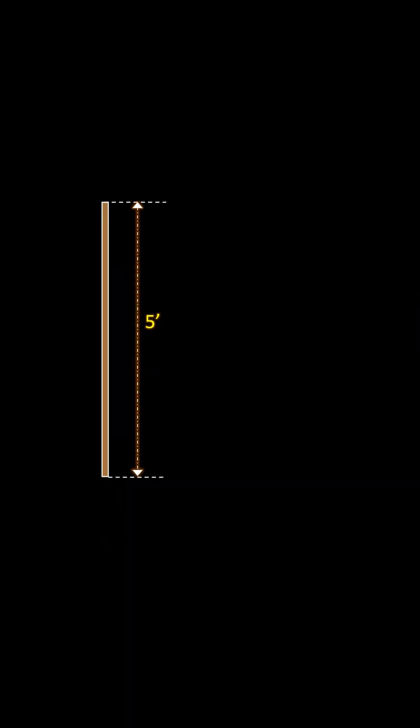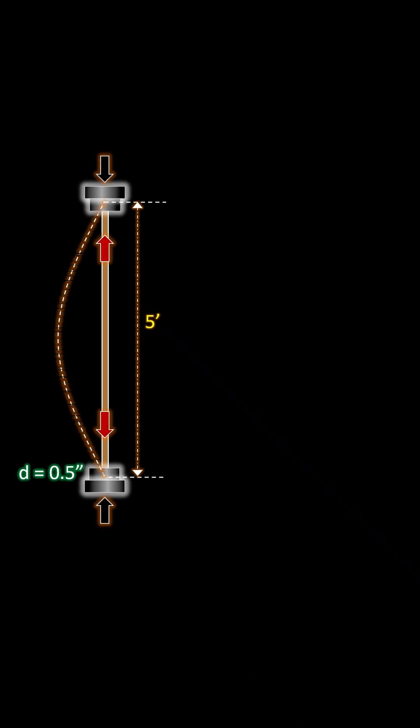If you take a 5-foot wooden stick that is a half an inch thick and press it on a hydraulic press so that the force is acting axially along its length, you will notice that it will start to bow outwards. This effect is known as buckling.